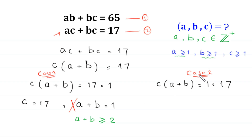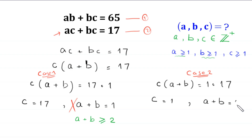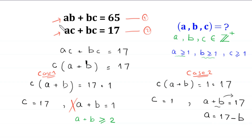Now we solve Case 2. From this case, C is equal to 1 and A plus B is equal to 17. From this equation, we move B to the right-hand side, so A is equal to 17 minus B. We now recall equation 1.